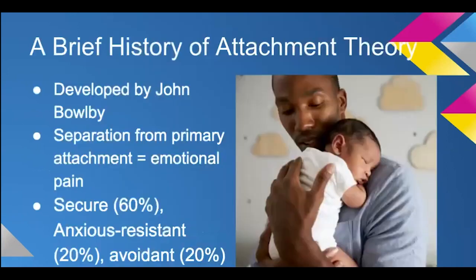Attachment theory was developed by John Bowlby to explain why children became so distressed when separated from their primary attachment figure. Most of the studies were done with mothers, but that doesn't mean mothers are the only primary attachment figure. Foster parents, fathers, and extended family — as long as there is an attachment figure meeting the child's emotional, social, and biological needs — they can become the primary attachment figure. The word 'mother' is used here because it's where most of the studying went and it remains the standard.